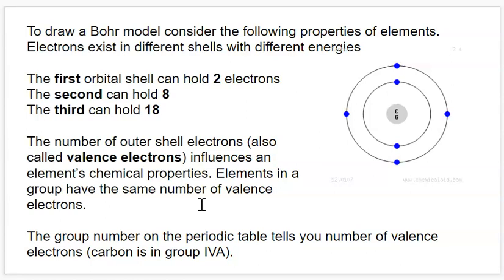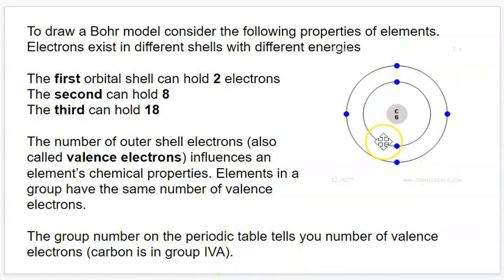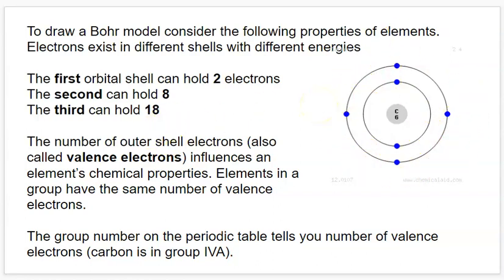You can always know how many valence electrons things are going to have by the column that they're in. If you look at the periodic table, you'll see that carbon is in group 4A. It corresponds to the group that has four valence electrons. And if you were to draw a Bohr model of anything in that column, you would see that it still only has four electrons in its outer shell.